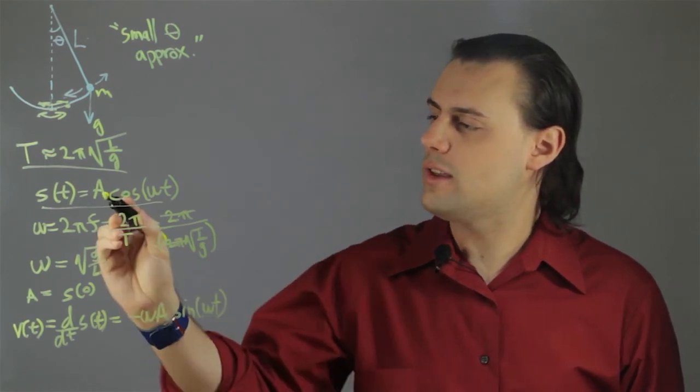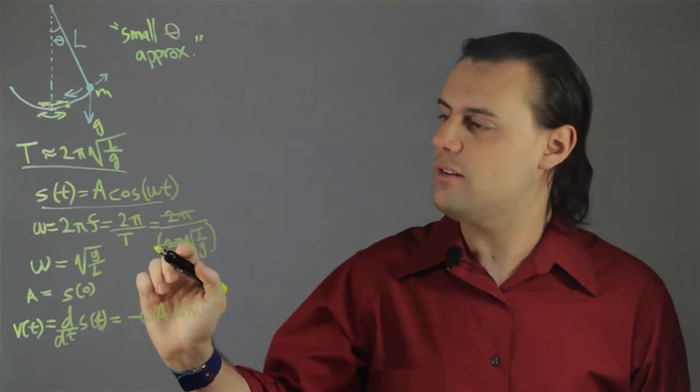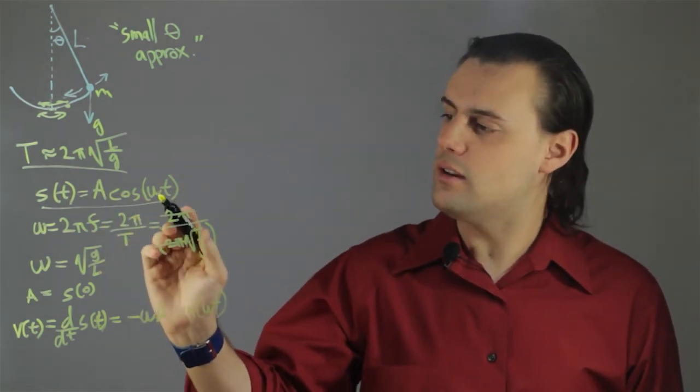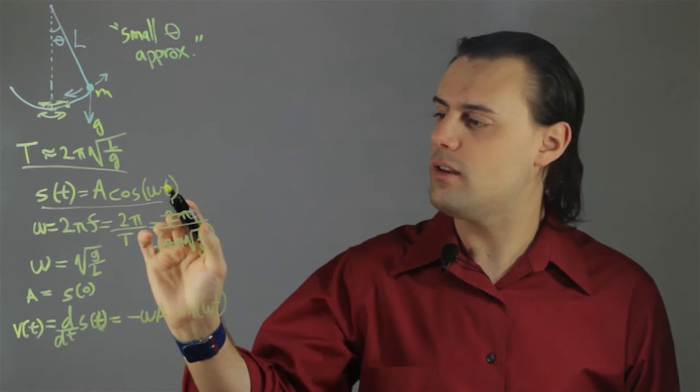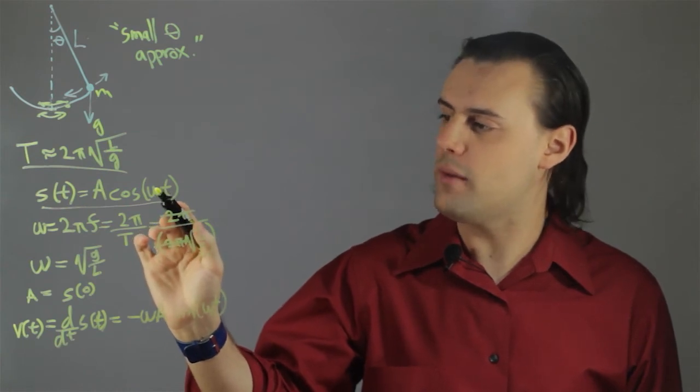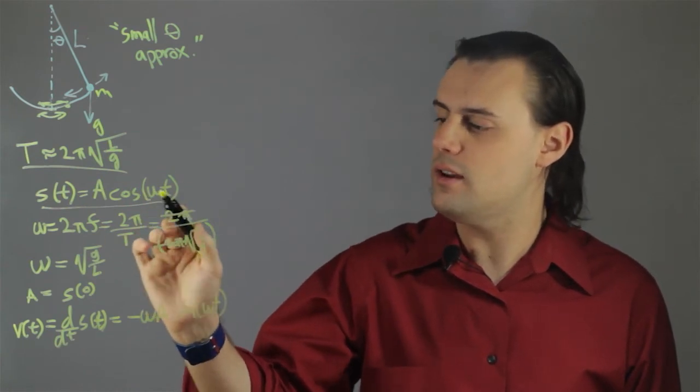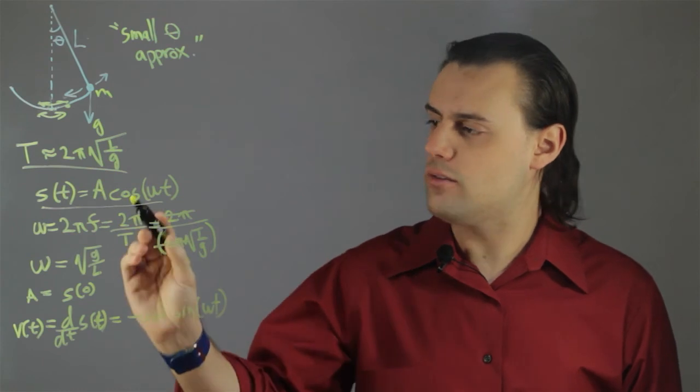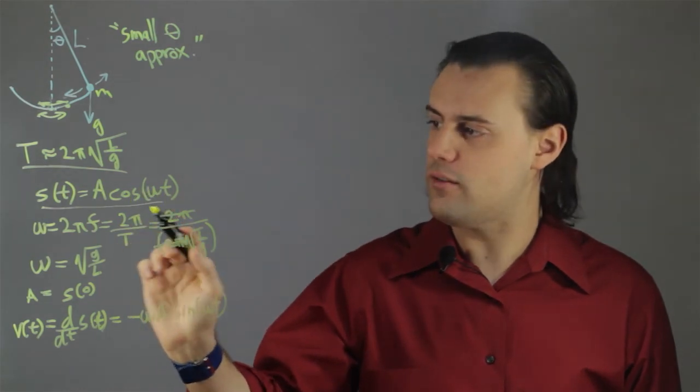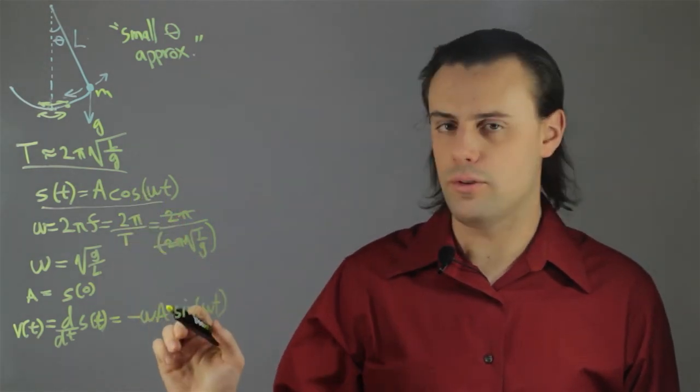Where I've left the amplitude alone because it is a constant, and I'm using the differentiation chain rule, because I have a constant ω inside of this function of t, I pull it out, and of course the derivative of cosine is equal to negative sine.